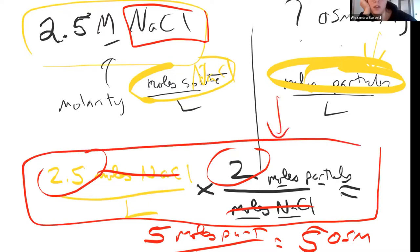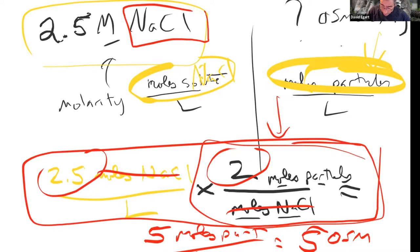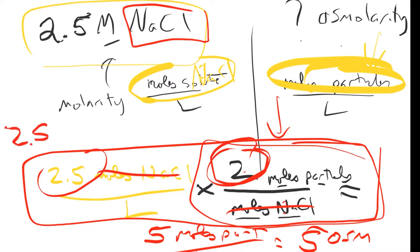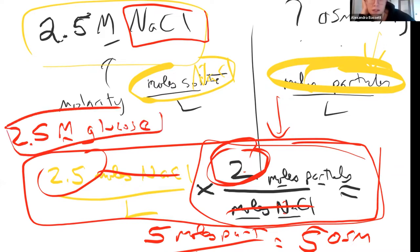This factor is basically just how many particles per each individual molecule. So if it doesn't break up — if we had 2.5 molar glucose, what would the osmolarity be? 2.5, same thing, because one glucose molecule is one particle. It's just times one, so it stays 2.5 osmolar.